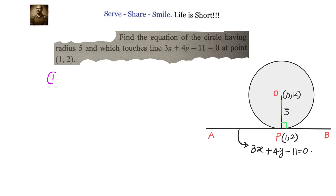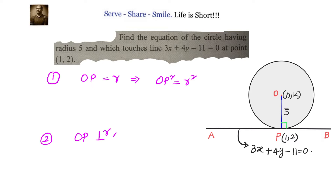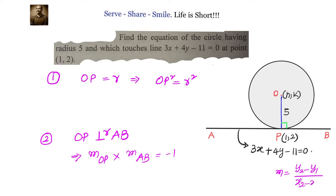The first concept we are going to use is that OP equals the radius, or OP squared equals R squared. The second concept is that OP is perpendicular to AB — at the point of contact, the radius and the tangent are at 90 degrees — so slope of OP multiplied with slope of AB equals minus 1.